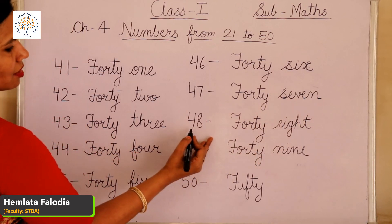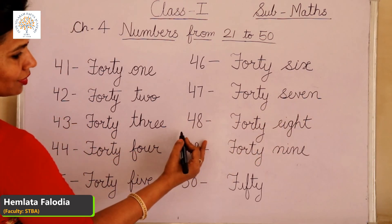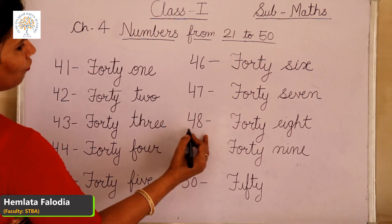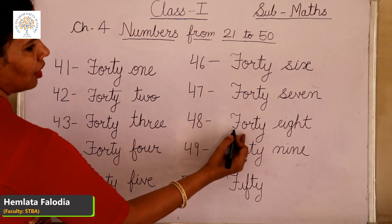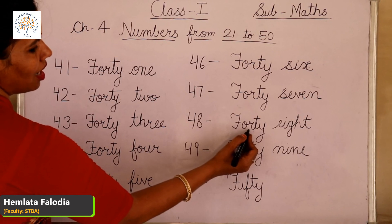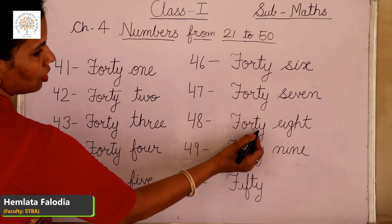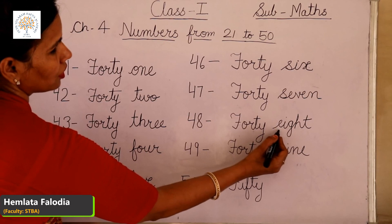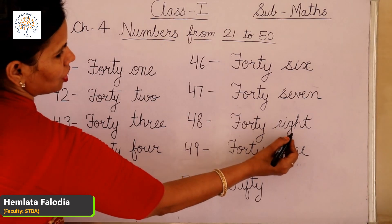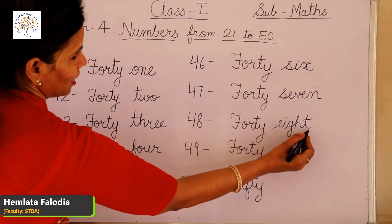Come to the next, 48. 40 plus 8 is 48. Number name: F-O-R-T-Y, 40, E-I-G-H-T, 8. This is 48.